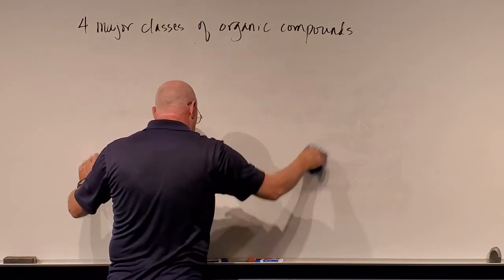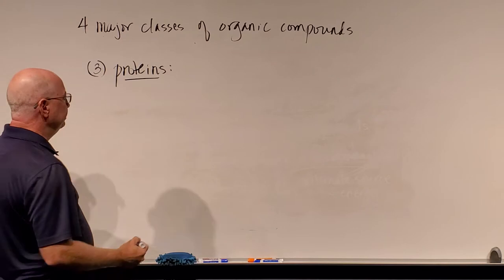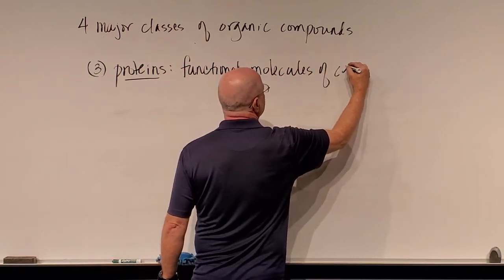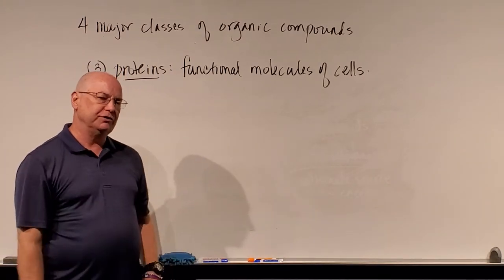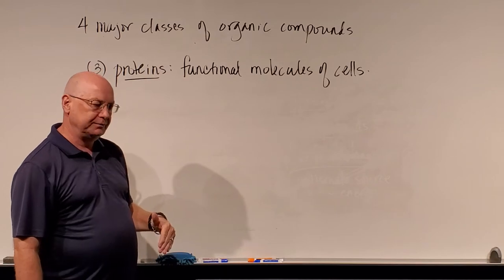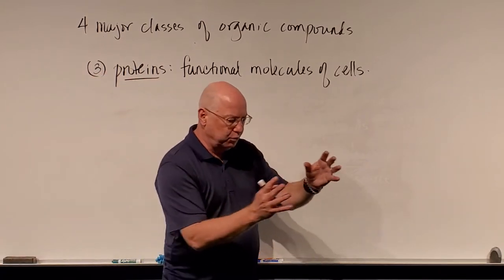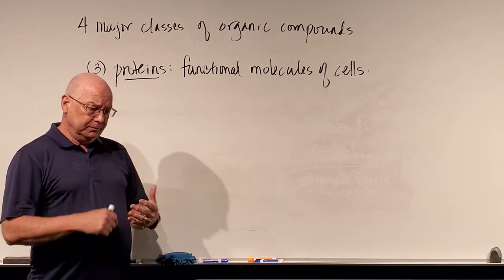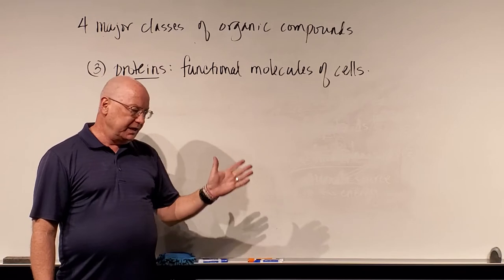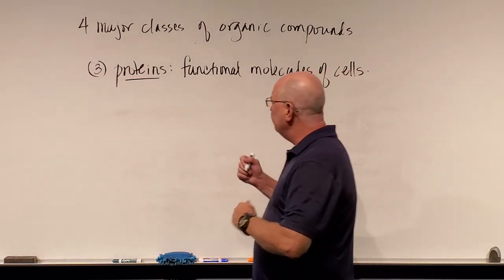The third major class of organic compounds is proteins. Proteins tend to be the functional molecules of cells — they perform most of a cell's functions. Enzymes that break down sugars to make ATP are proteins. Proteins convert sugar into fat, move organelles, copy DNA, and turn DNA into RNA. The atoms that make up proteins are carbon, hydrogen, oxygen, and nitrogen. Two amino acids also contain sulfur.